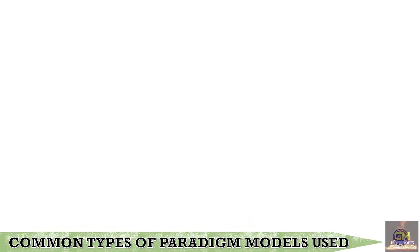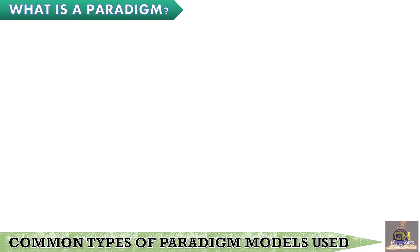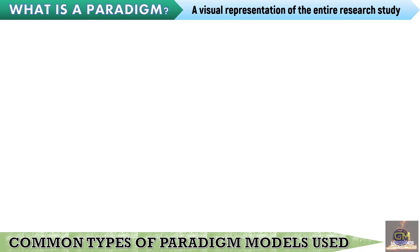Now we are going to discuss the common types of paradigm models used. But before that, we are going to discuss what a paradigm is. A paradigm is a visual representation of the entire research study. This is how a conceptual framework would look like, as it shows the different variables involved in the study as well as the possible relationships that they have with each other.